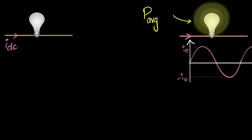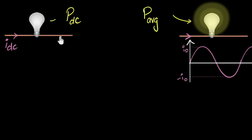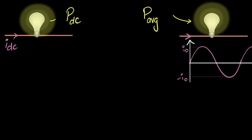Now let's say I take that same bulb and pass a direct current through it — DC, constant current, not alternating. That will also dissipate some power, but the power dissipated, which I'll call the DC power, will be constant. So my question is: what should be the value of this DC current so that the power dissipated over here is exactly equal to the average power dissipated by the alternating current?